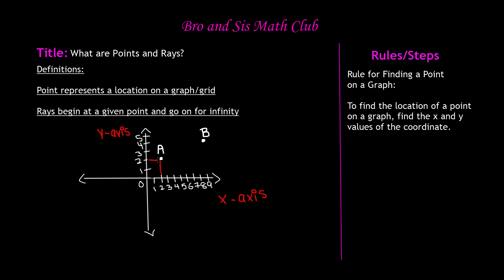This is where it intersects at point A. The coordinates for point A are going to be written as parentheses x, y. So for point A, the x value is two and the y value is also two, so we close the parentheses. We'll read this as two, comma, two. So the coordinates for point A are (2, 2).